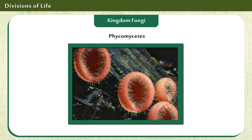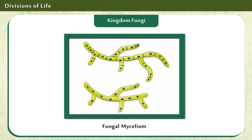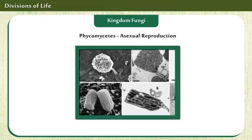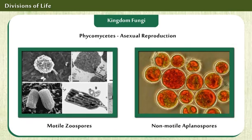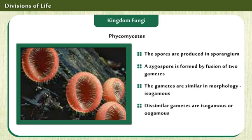Phycomycetes are classified under Kingdom Fungi. They are obligate parasites. The mycelium is aseptate and coenocytic. Asexual reproduction occurs by motile zoospores or by non-motile aplanospores. Some of their features are displayed on the screen.